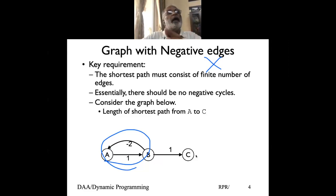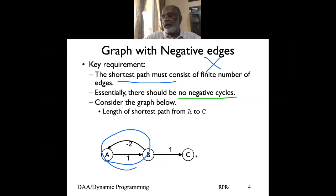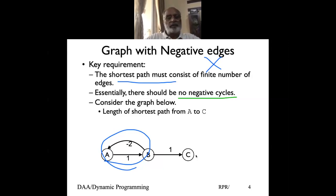So essentially, we can find shortest distances only if there are no negative cycles. If there is a negative cycle in the graph, the shortest distance has no meaning because it becomes minus infinity. We assume the graph has no negative cycle. We will come back to a way to detect whether the graph has a negative cycle, but first we start with the assumption of no negative cycles.